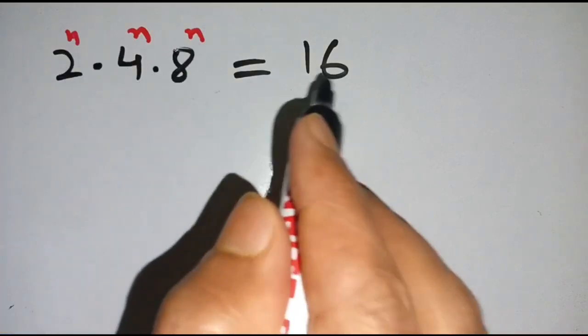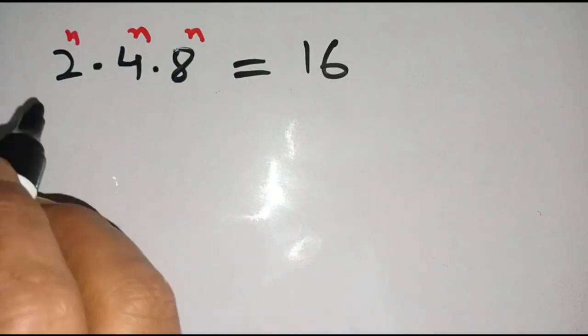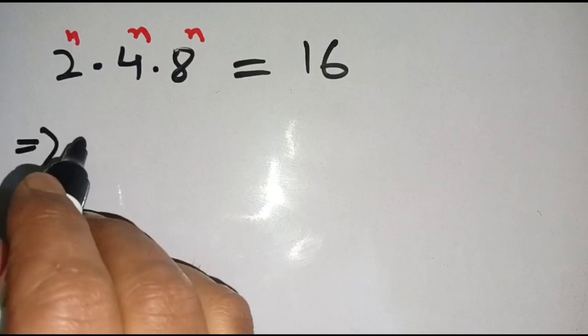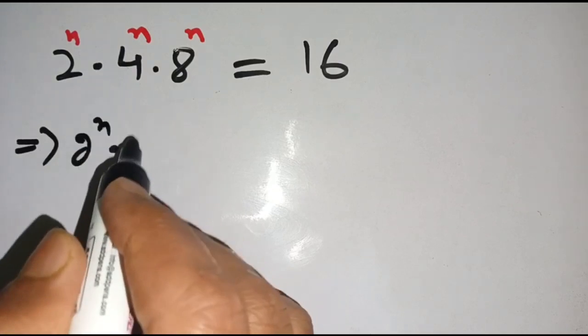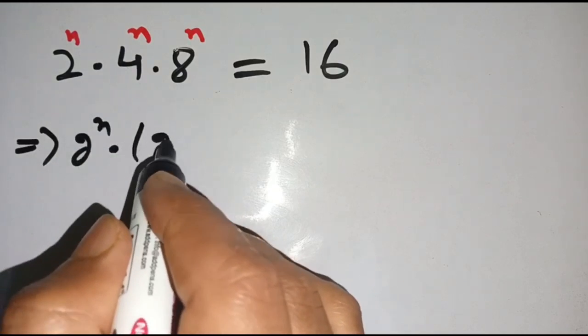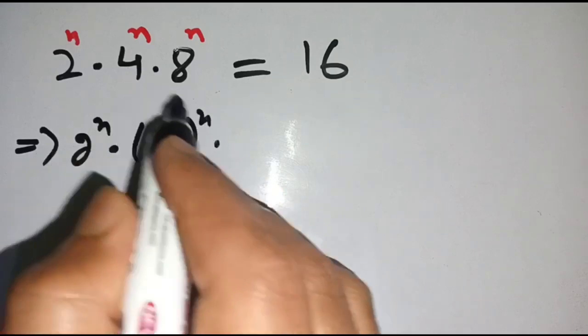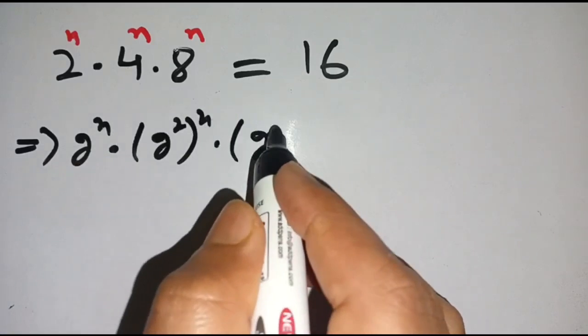Let us solve this. We can write this as 2 power n times 4 can be written as 2 power 2 bracket power n, times 8 can be written as 2 power 3 bracket power n is equal to 16.